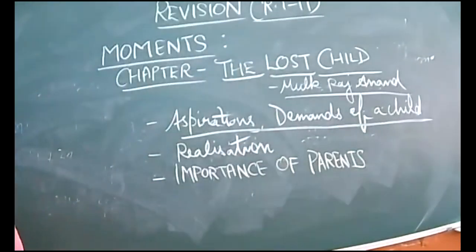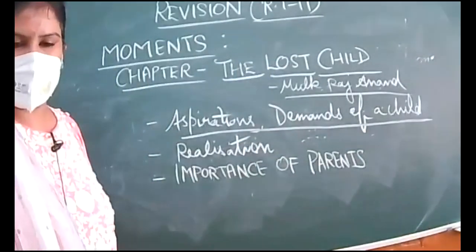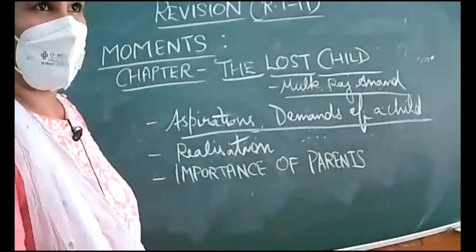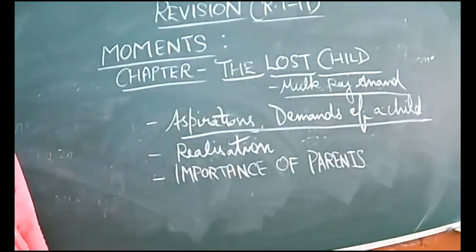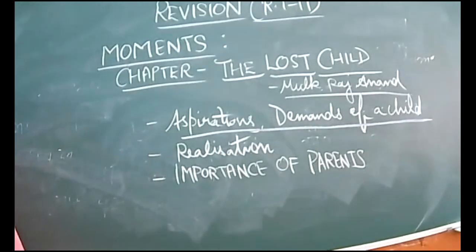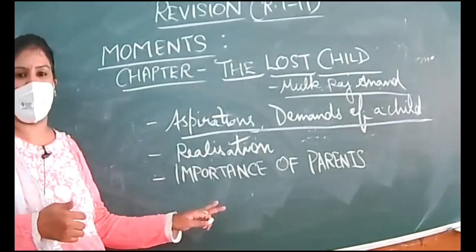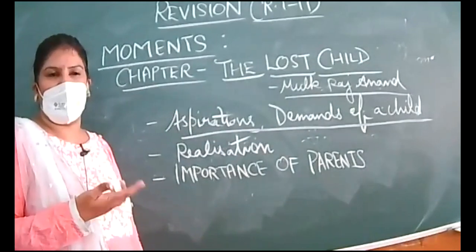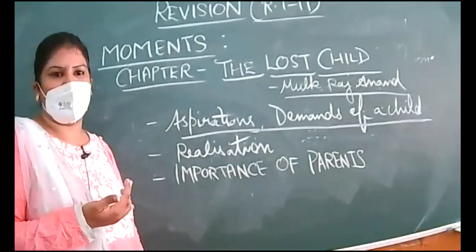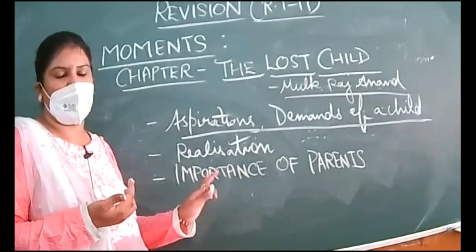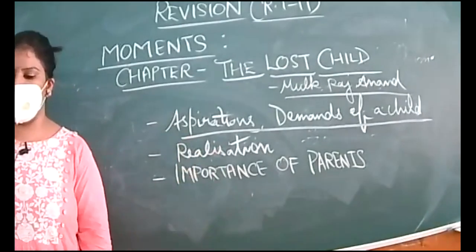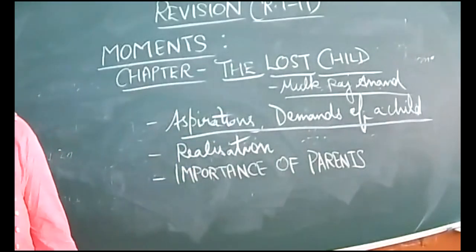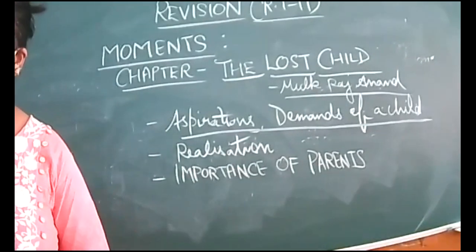The child keeps searching for things and keeps asking to buy things, but suddenly he realizes that parents are important. He does not realize this when he has his parents with him. After losing them and getting lost in fear, he then realizes the importance of his parents. That is the theme of this chapter.